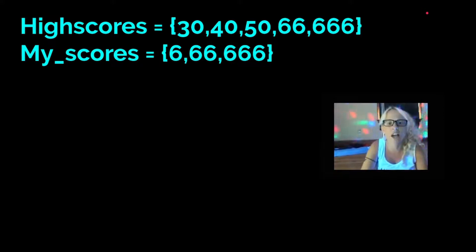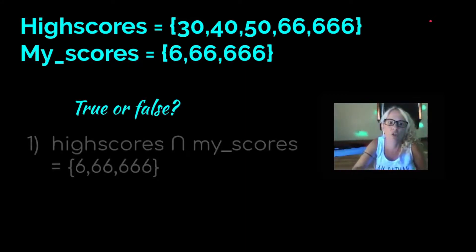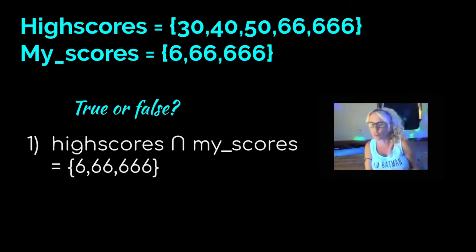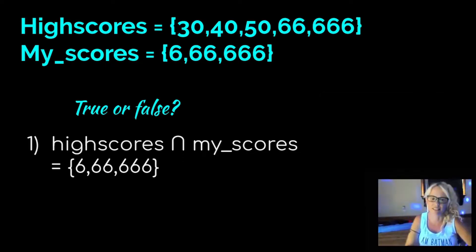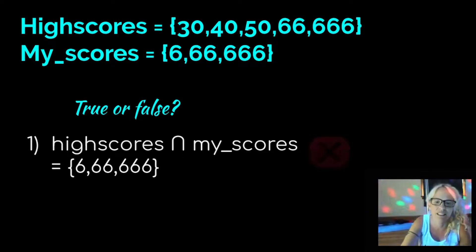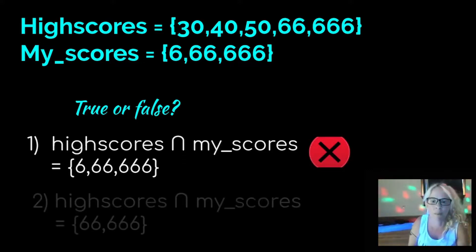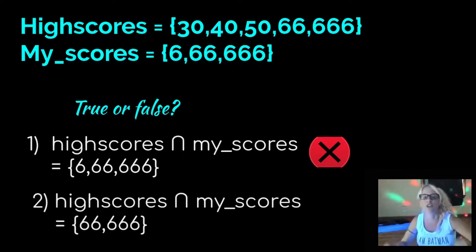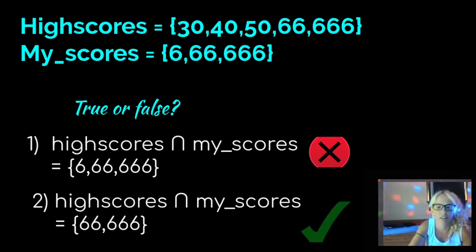If the set of high scores equals 30, 4, 50, 66, and 666. And my scores equals the set 6, 66, and 666. True or false? The intersection between high scores and my scores is going to equal the set 6, 66, and 666. Is this true or false? This is, sorry, try again. Why? 6 is not the high score. The lowest high score is 30. What about this? Is this true? The intersection of high scores and my scores is equal to 66 and 666. Yay! That is true. That is the intersection.